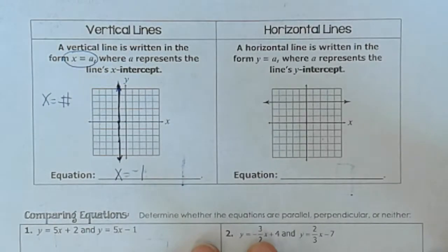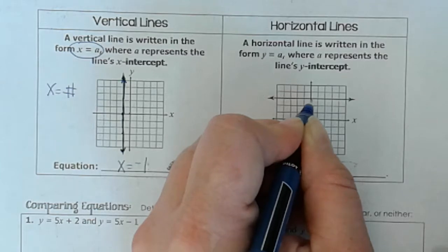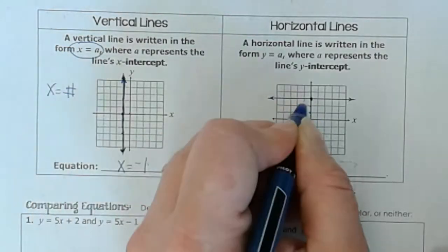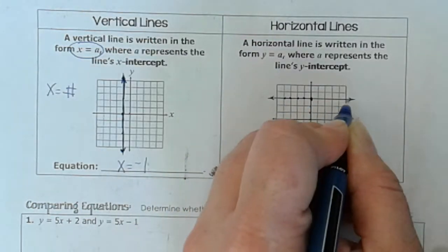Now for the horizontal lines, let's look at this. So if I start here at the origin and I count up, this is 1, 2, 3. This is y equals 3. Well, this is also y equals 3, and this is y equals 3, and this is y equals 3. These are all y equals 3.